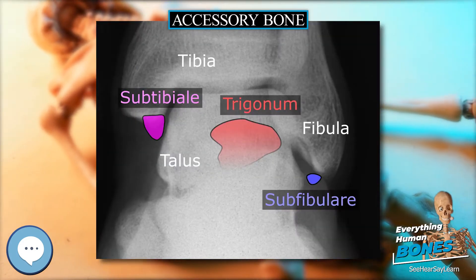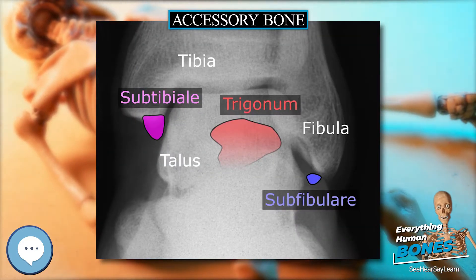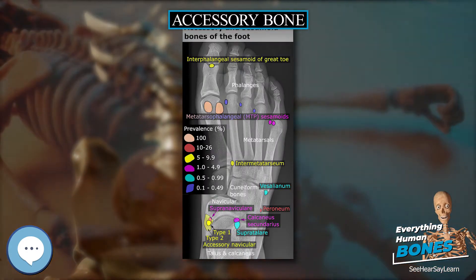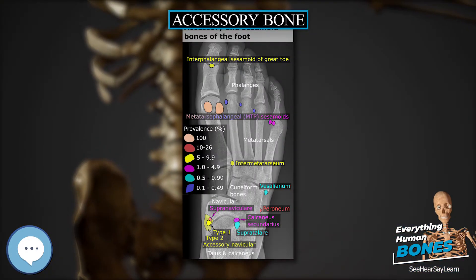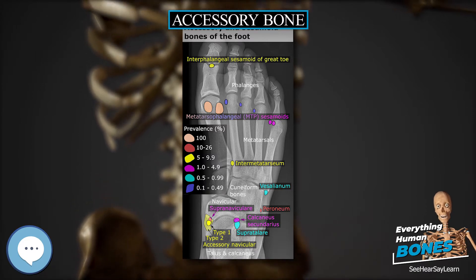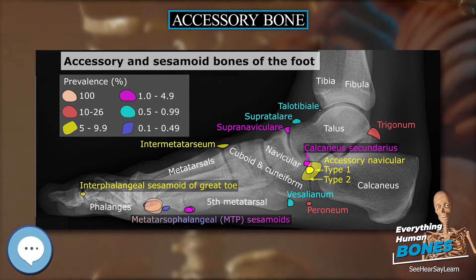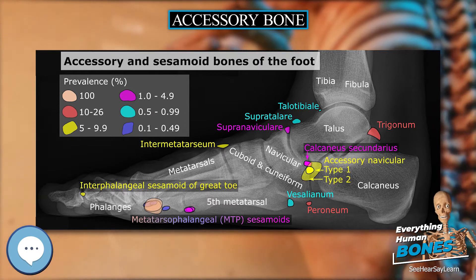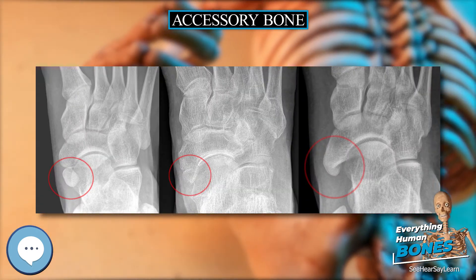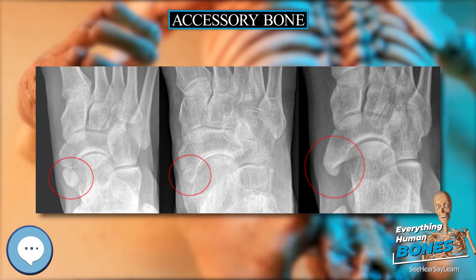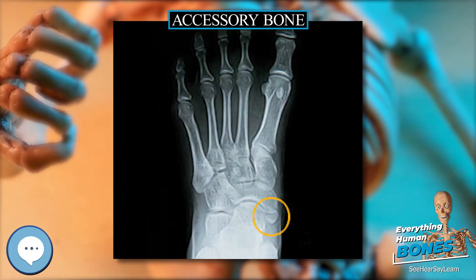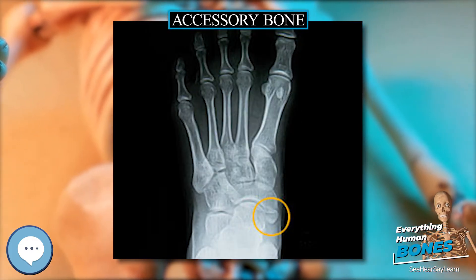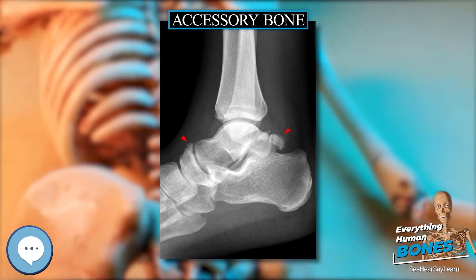The os ulna styloideum is an ulnar styloid process that is not fused to the rest of the ulna bone. On x-rays, it is sometimes mistaken for an avulsion fracture of the styloid process; however, the distinction between these is extremely difficult. It is alleged that the os ulna styloideum has a close relationship with, or is synonymous with, the os trigonum secundarium.